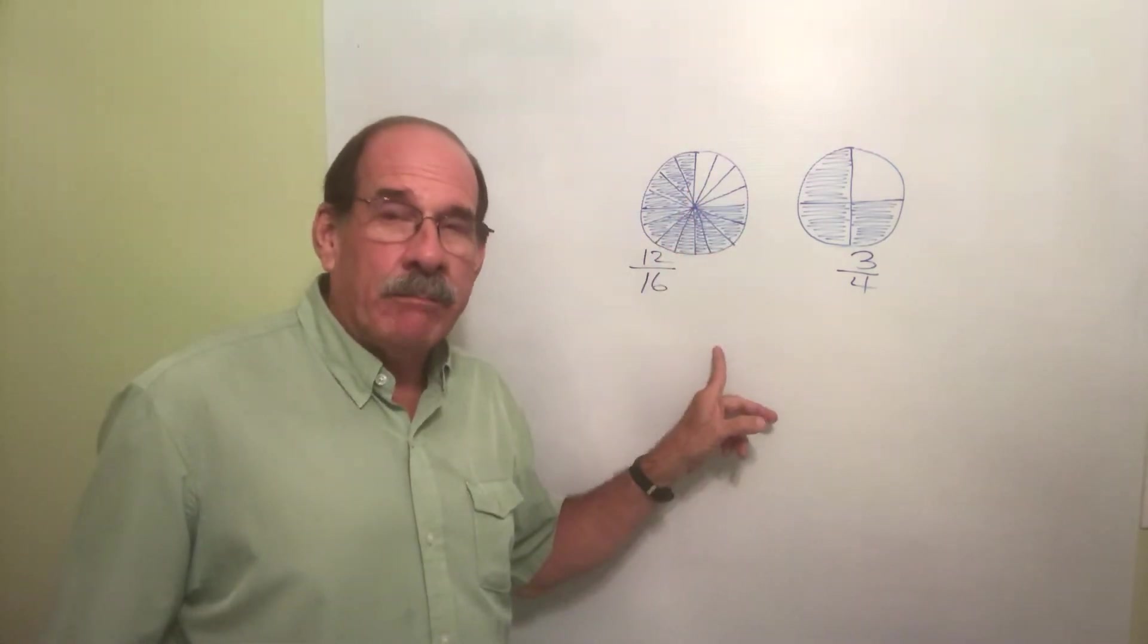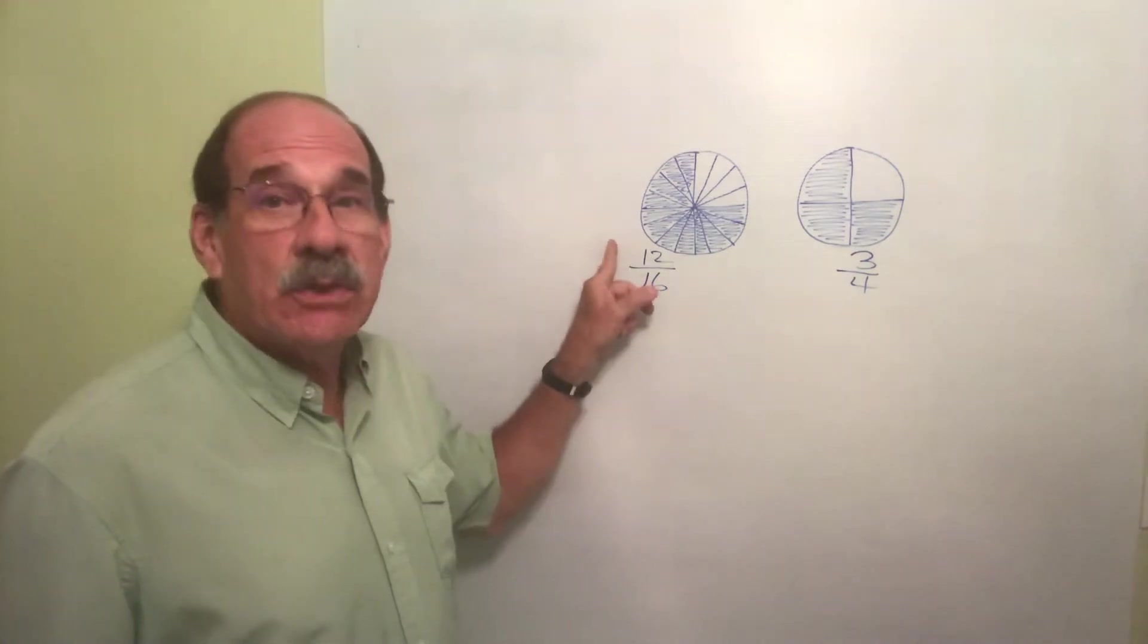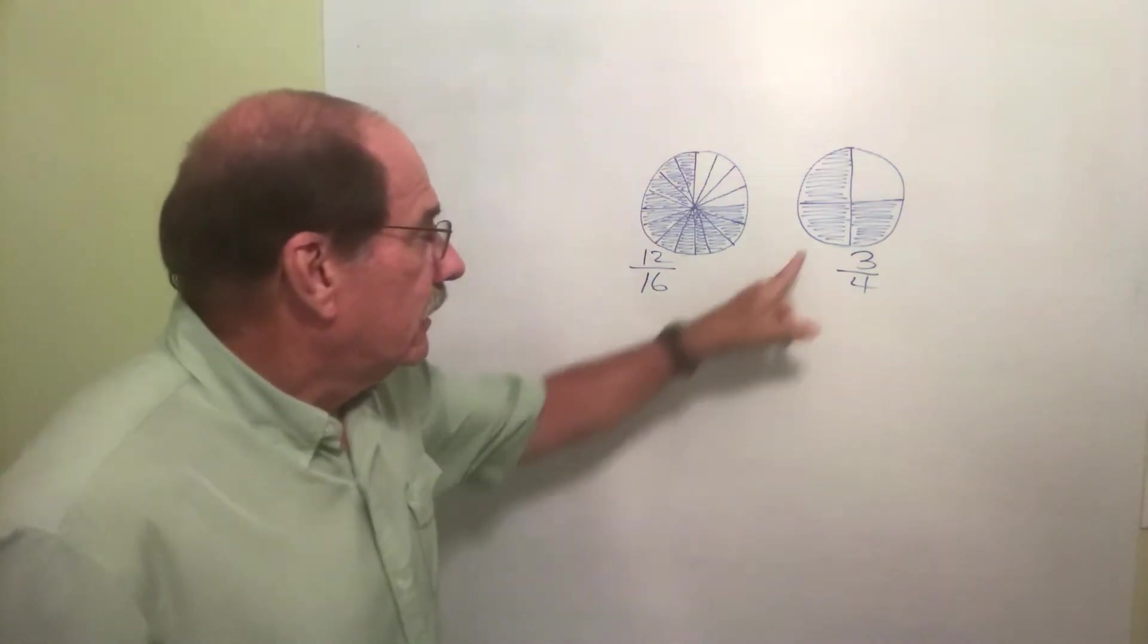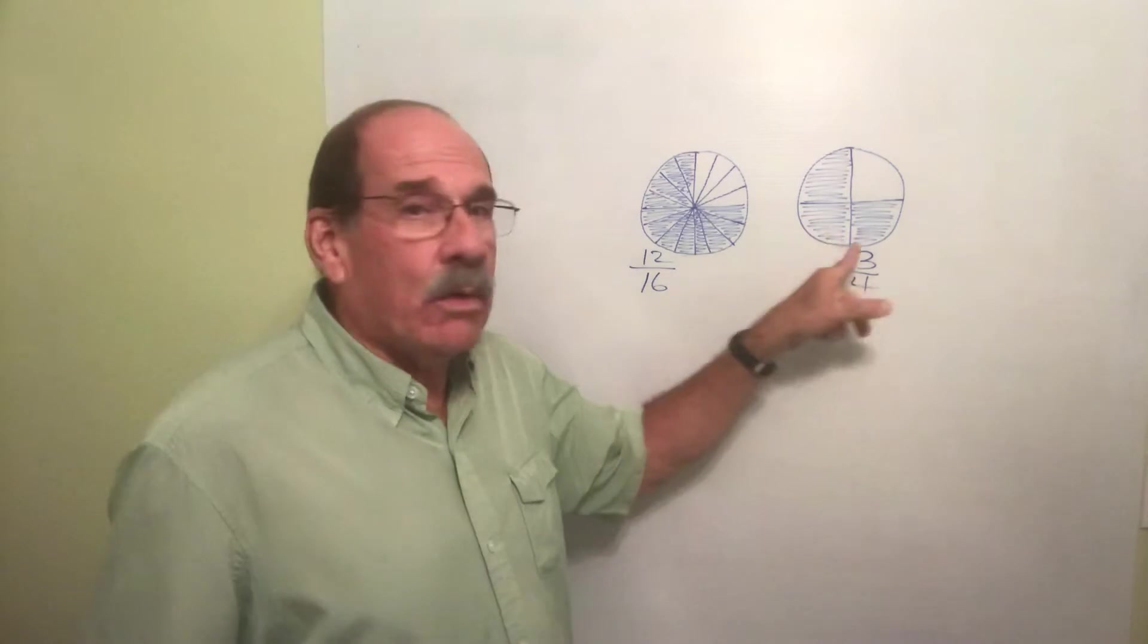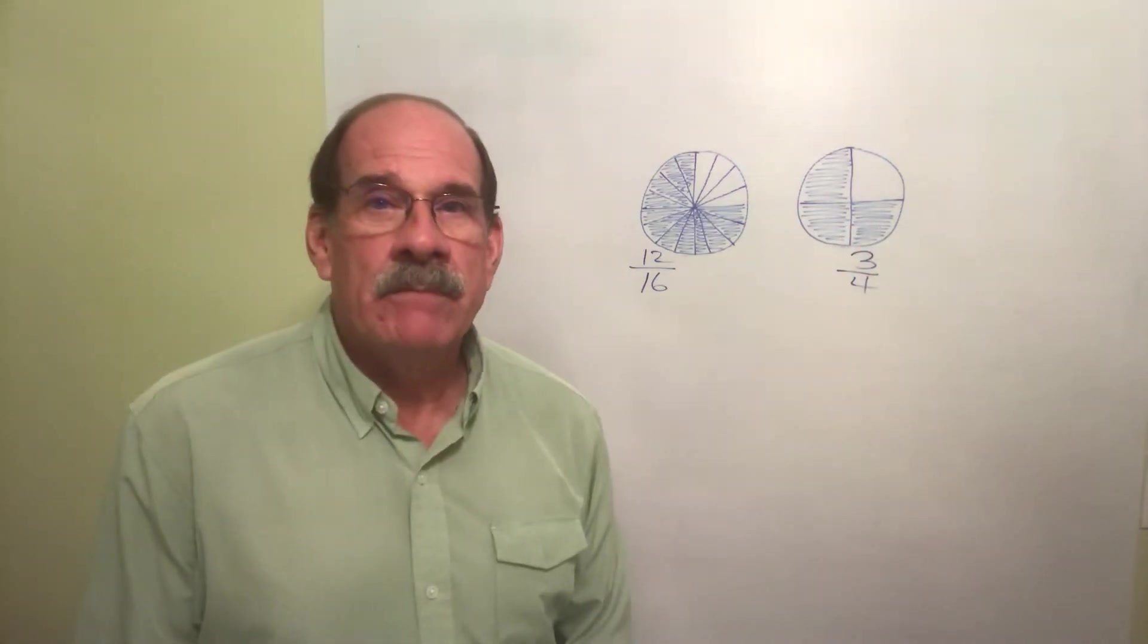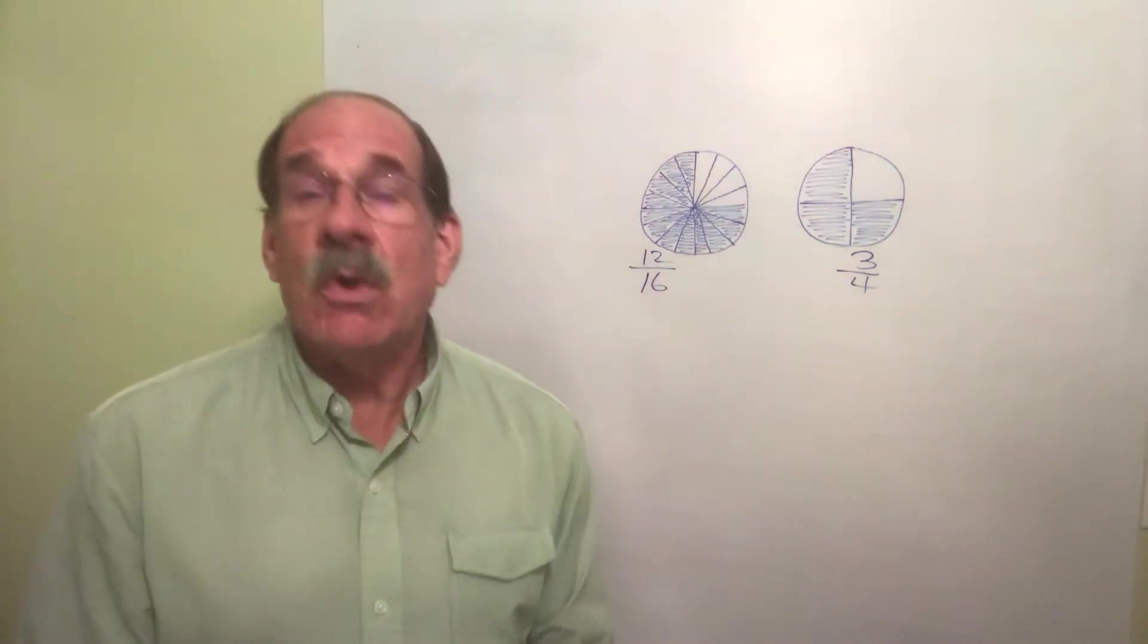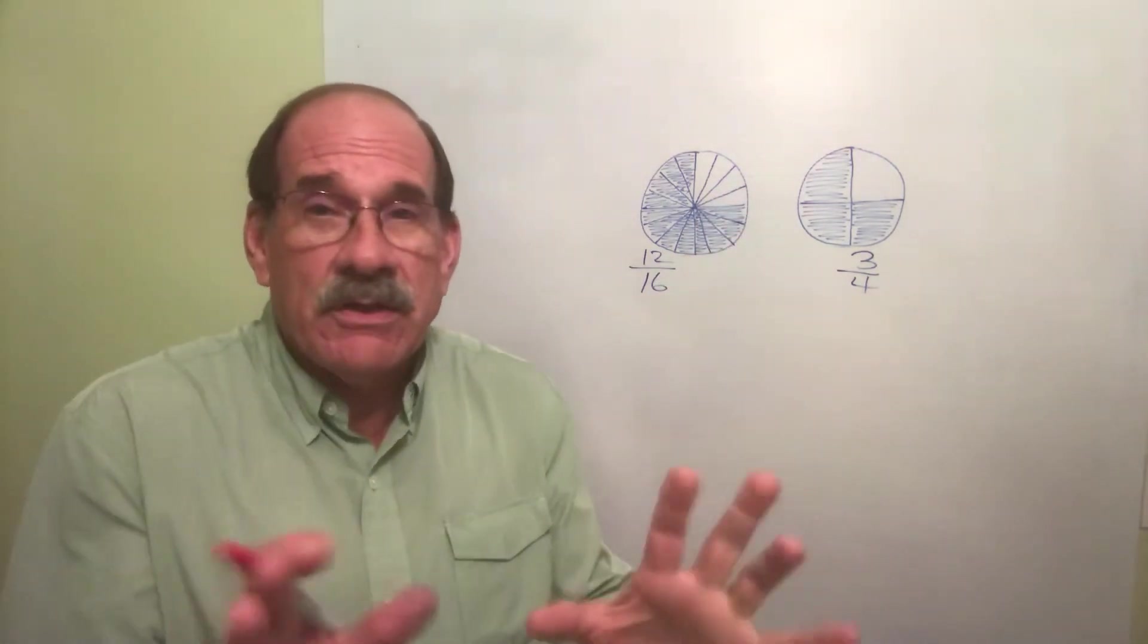12/16ths of a pizza means I divide the pizza into 16 pieces and get 12 of them. This one I divide into four equally sized pieces and get three of them. If you look carefully, that's the same amount, isn't it?